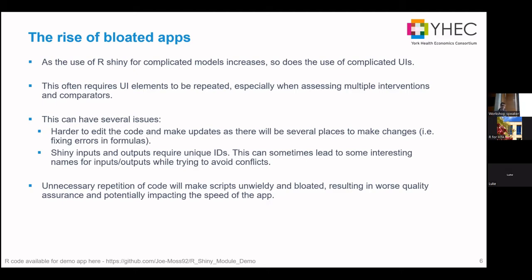The other big issue — and those who have used Shiny before will know this — is that you have to come up with unique ID names for your inputs. They can't be repeated; they've got to be unique per input. If you're like me, you end up using some very long and unhelpful names to try and distinguish between all your inputs, like input_shiny_one, two, three, four, five. Again, that makes it a lot harder to QA and follow what's going where.